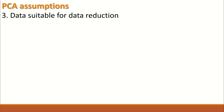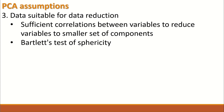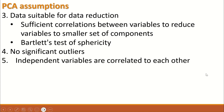The third assumption is that the data should be suitable for data reduction, meaning there is sufficient correlation between variables to reduce them to a smaller set of components. There should be a correlation between items within a certain range, from 0.3 to 0.8. Bartlett's test of sphericity can be performed to test this assumption.